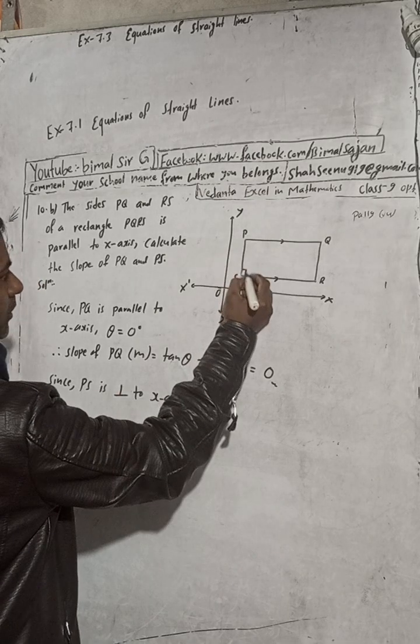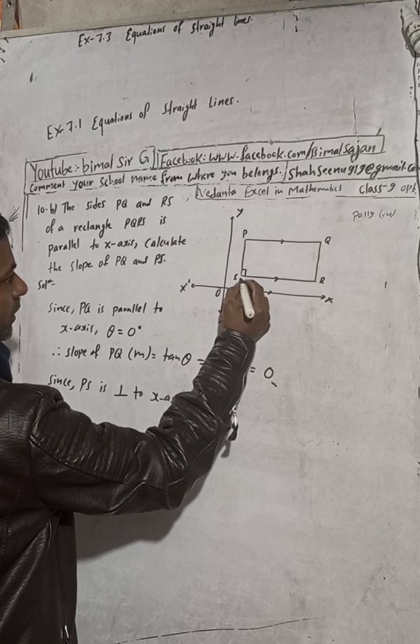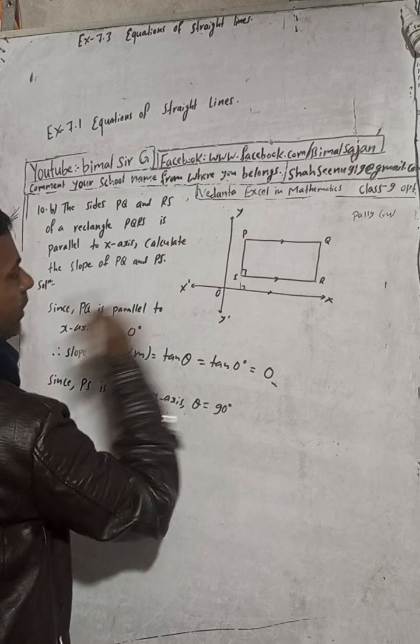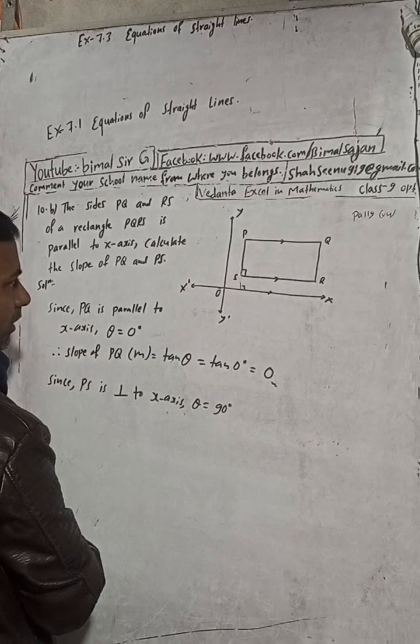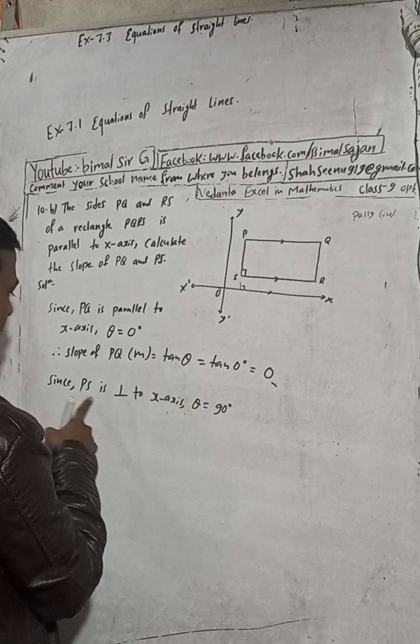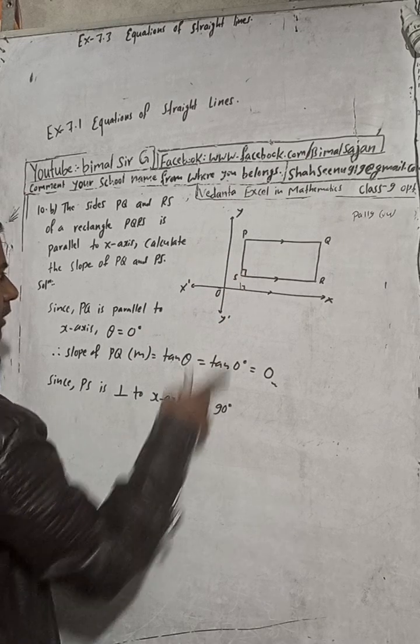So this is 90 degree. So this is 90 degree. That means PS is perpendicular to x axis. So theta is 90 degree.